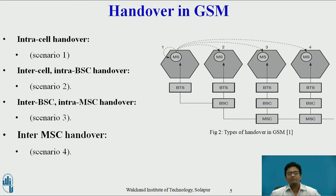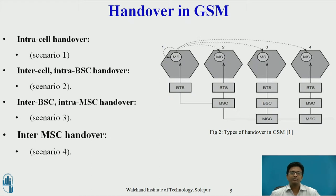The second type is InterCell IntraBSC handover. In this type, the mobile session moves from one cell to another cell but stays within the control of the same BSC. The BSC then performs the handover by assigning a new radio channel to the new cell and releasing the old one, as shown in scenario two.